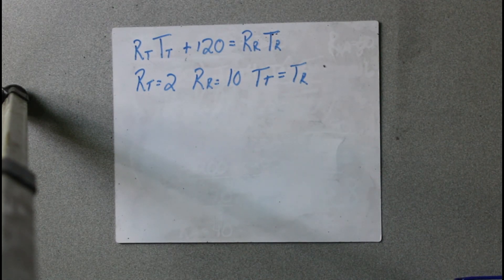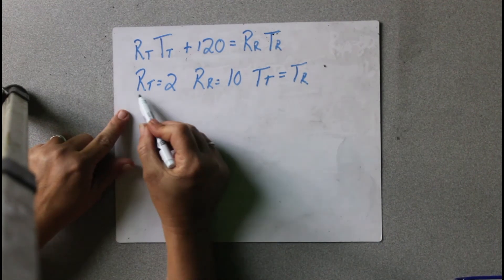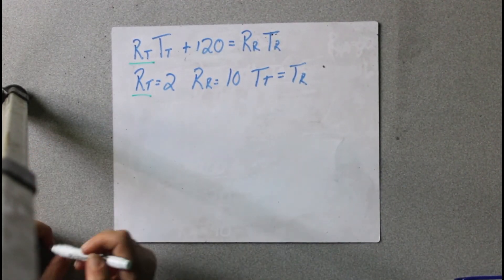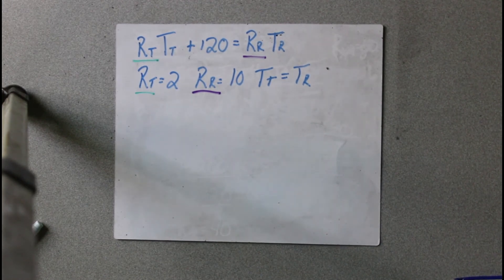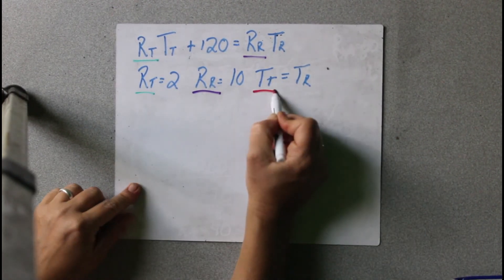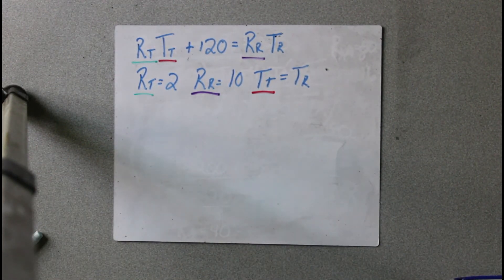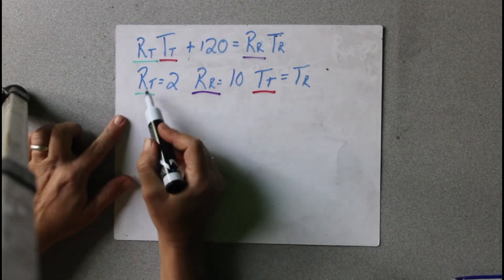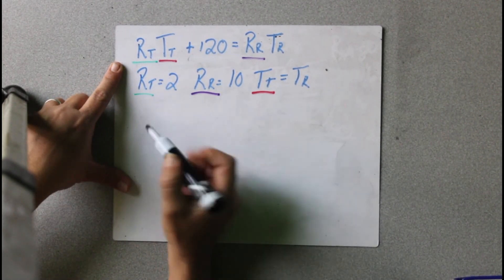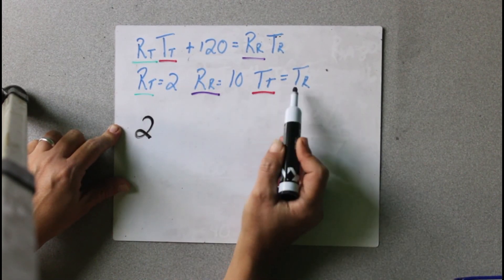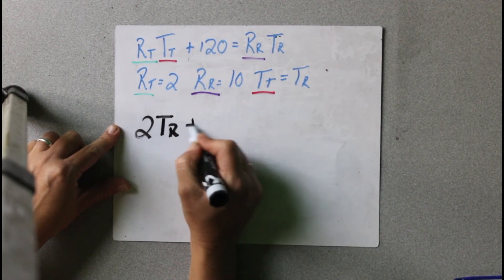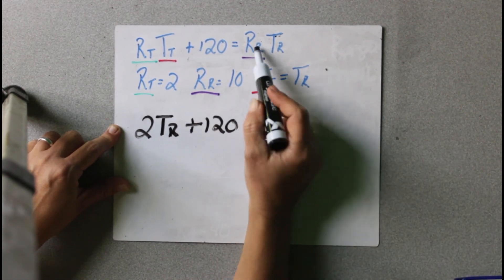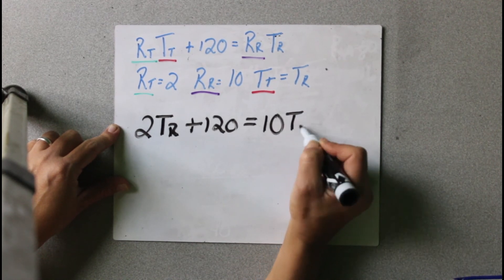So we're going to substitute in the values. RT is right here, RR is right there, and TT is right there. We're substituting in those values so that we only have one variable left. RT equals 2, TT equals TR, so we put TR there. Plus 120 equals RR, which is 10, times TR. Now you see how we only have TR as our variable.